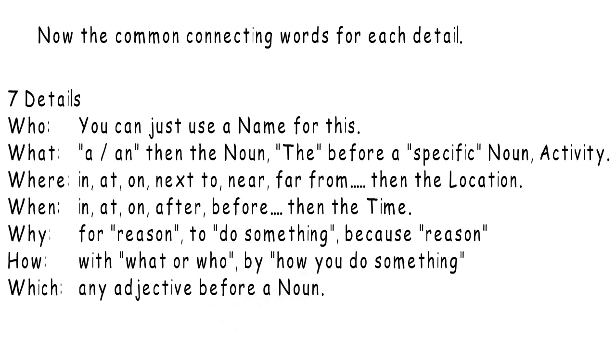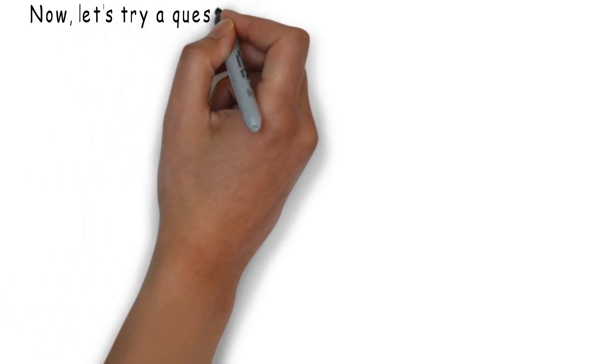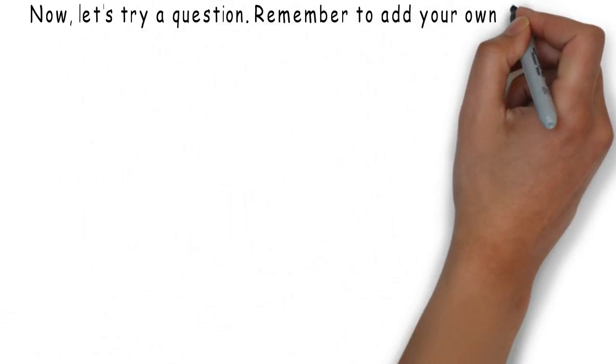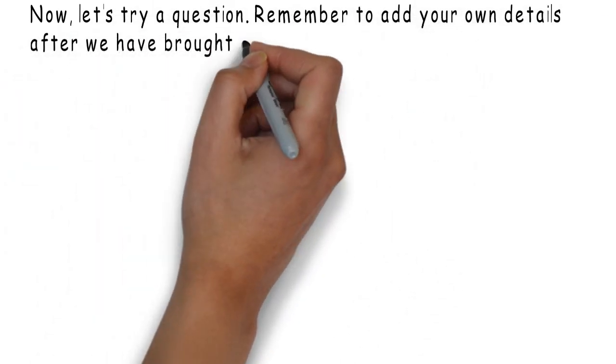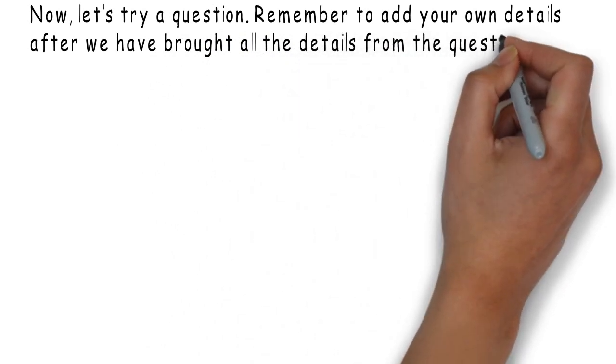How: With what or who. By, how do you do something. And which: Any adjective before the noun. Now, let's try a question. Remember to add your own details after we have brought every detail from the question.